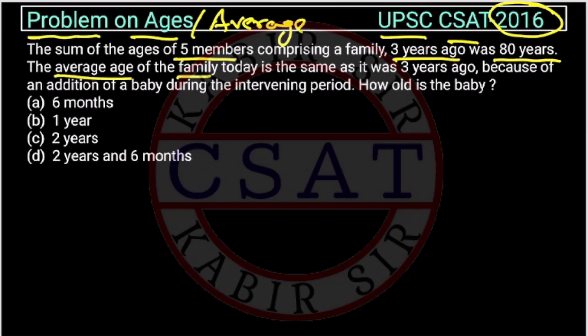The sum of the ages of 5 members comprising a family 3 years ago was 80 years. The average age of the family today is the same as it was 3 years ago, because of the addition of a baby during the intervening period. How old is the baby? So the sum 3 years ago is 80.